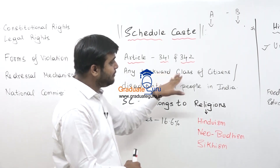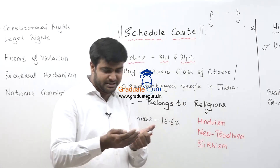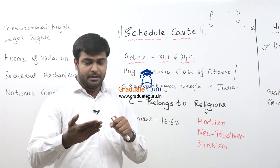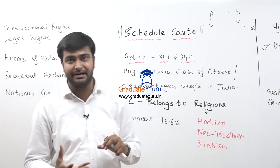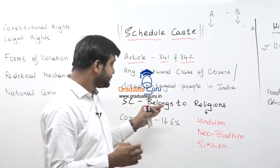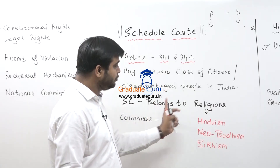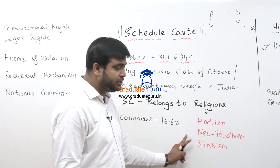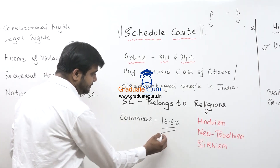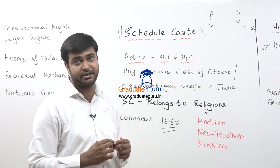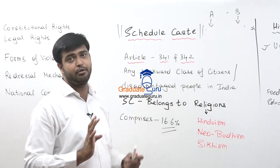Schedule Caste means any backward class of citizens or group — disadvantaged people in India who are not getting their advantage of basic rights and fundamental rights. Those people belong to Schedule Caste, but only if they belong to one of the three religions: Hinduism, Neo-Buddhism, and Sikhism. Schedule Caste comprises 16.6% of India's total population.